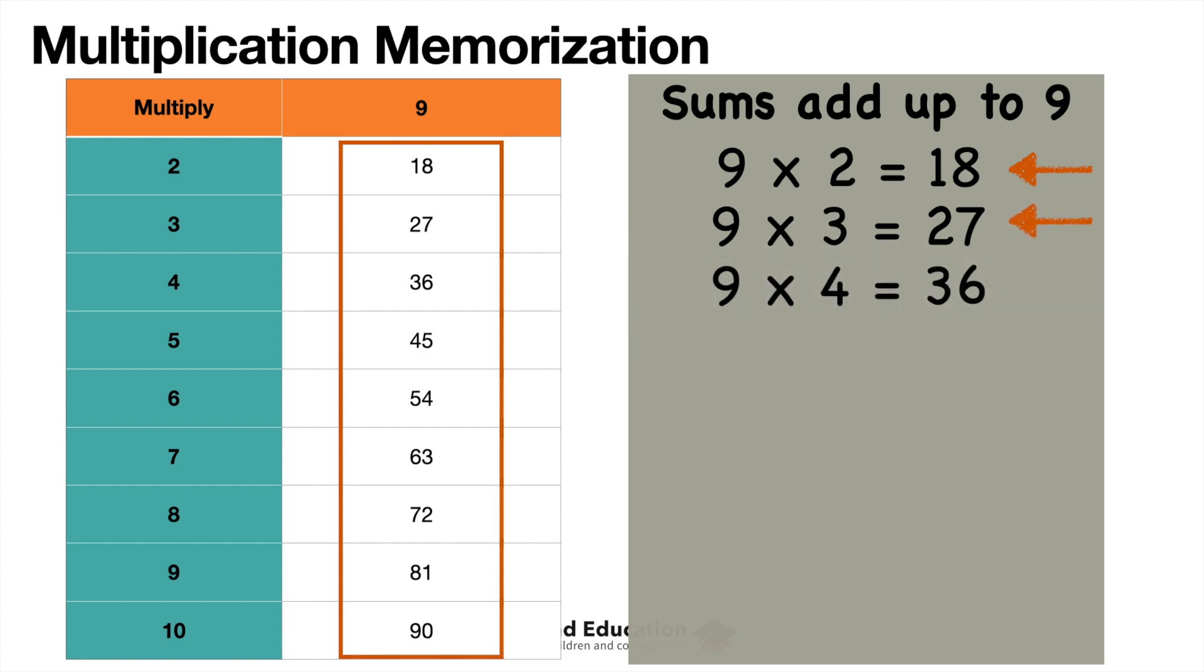Let's say 9 times 4, that's 36. 3 and 6 equals 9. That's why I know that answer is right. 9 times 5, that's 45. Well, that 4 and 5, 4 plus 5 equals 9.